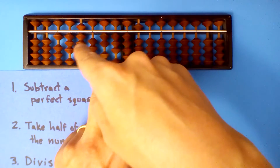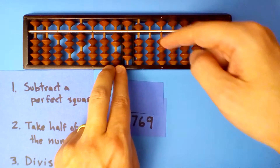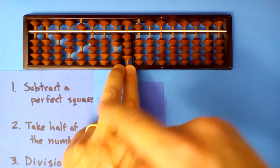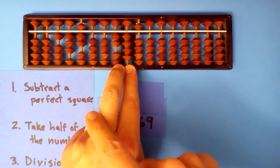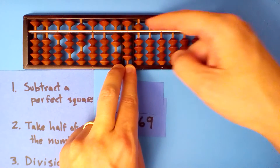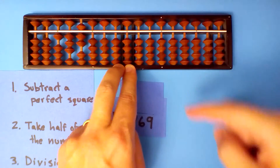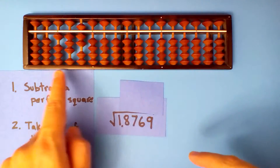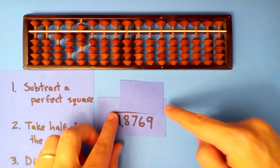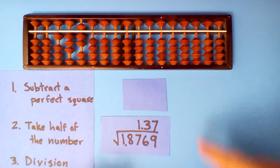How many times is 1.3 going to nine? Seven times. Multiply and subtract: seven times one is seven, seven times three is twenty-one, seven times five is twenty-one, seven times four is four. And our root is 1.37.